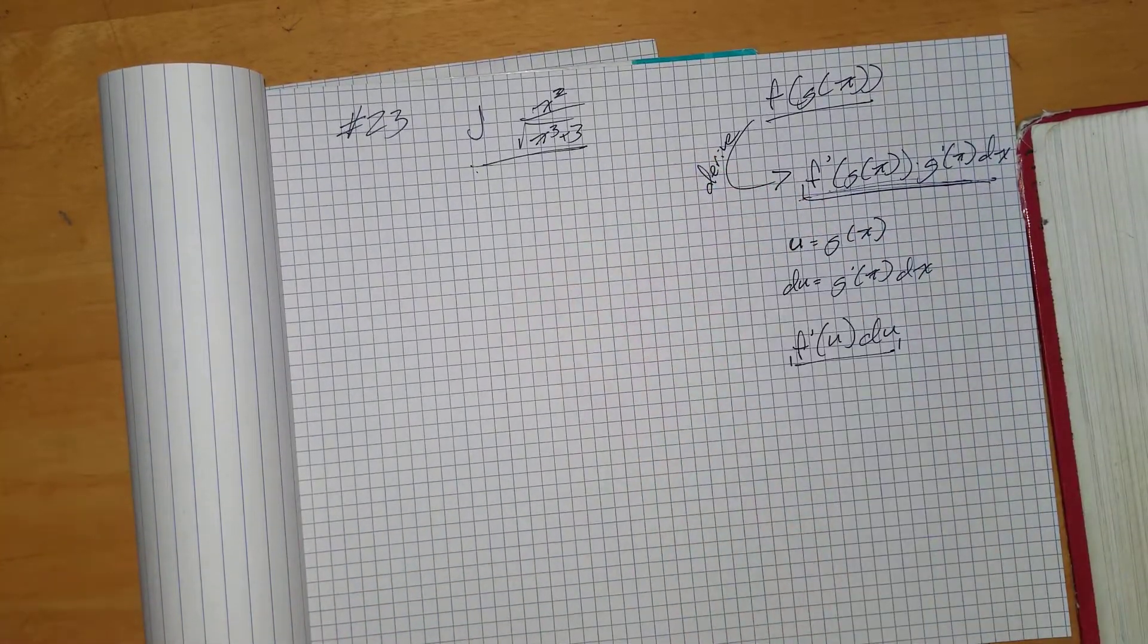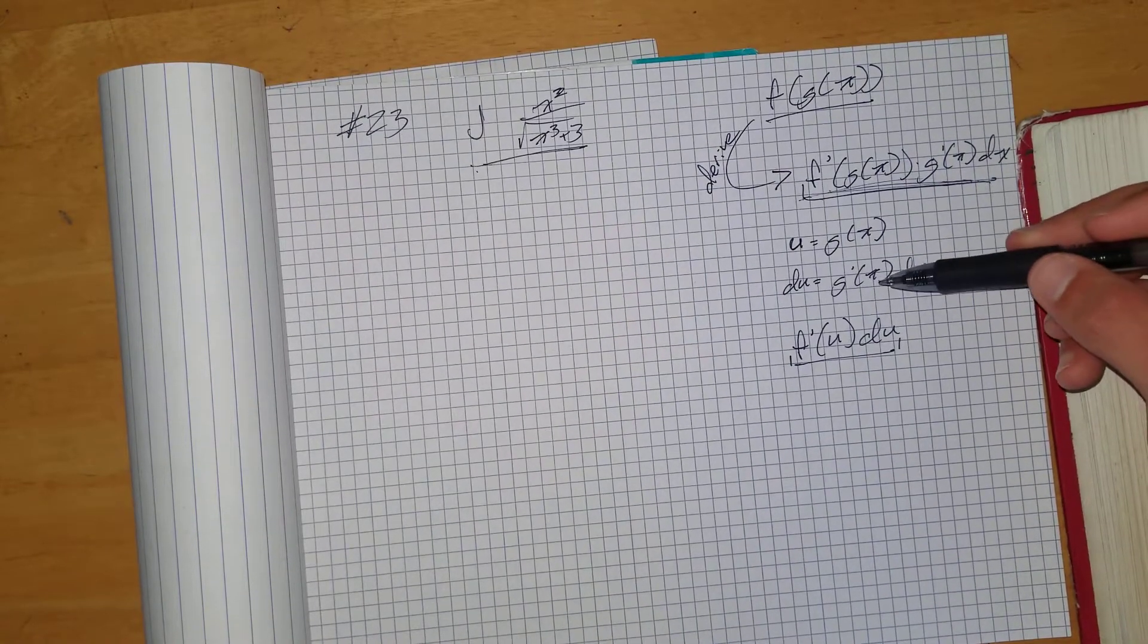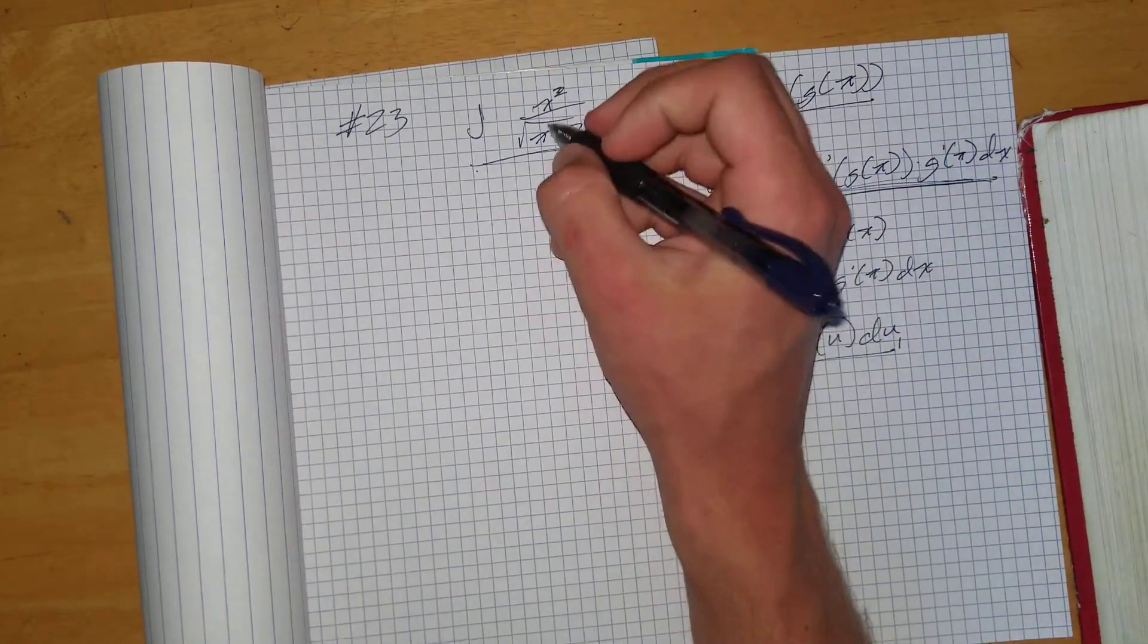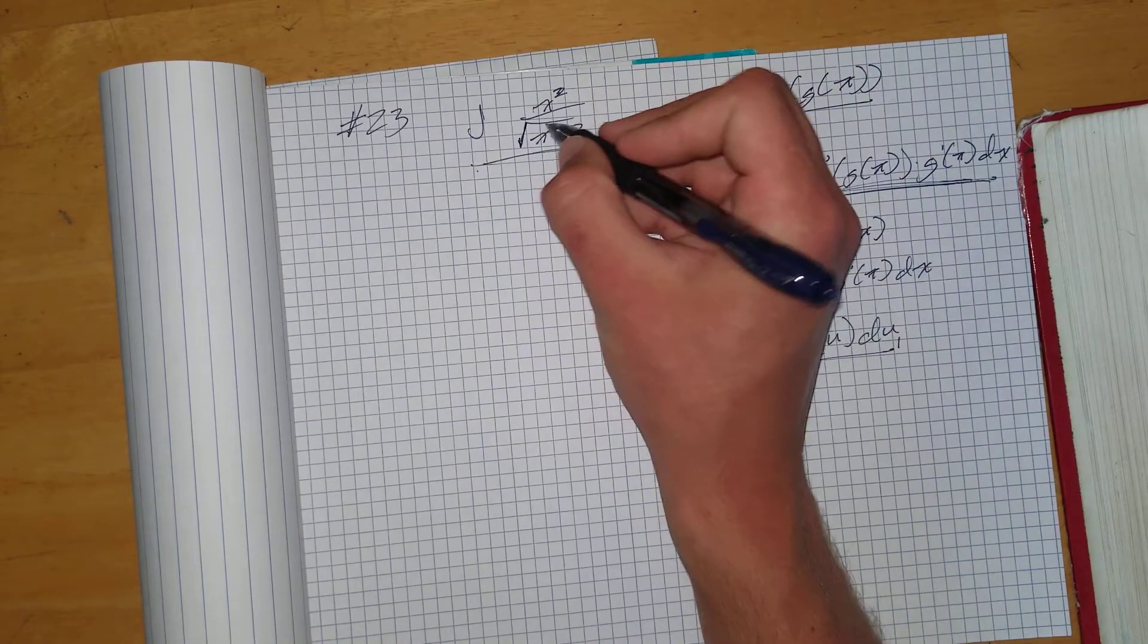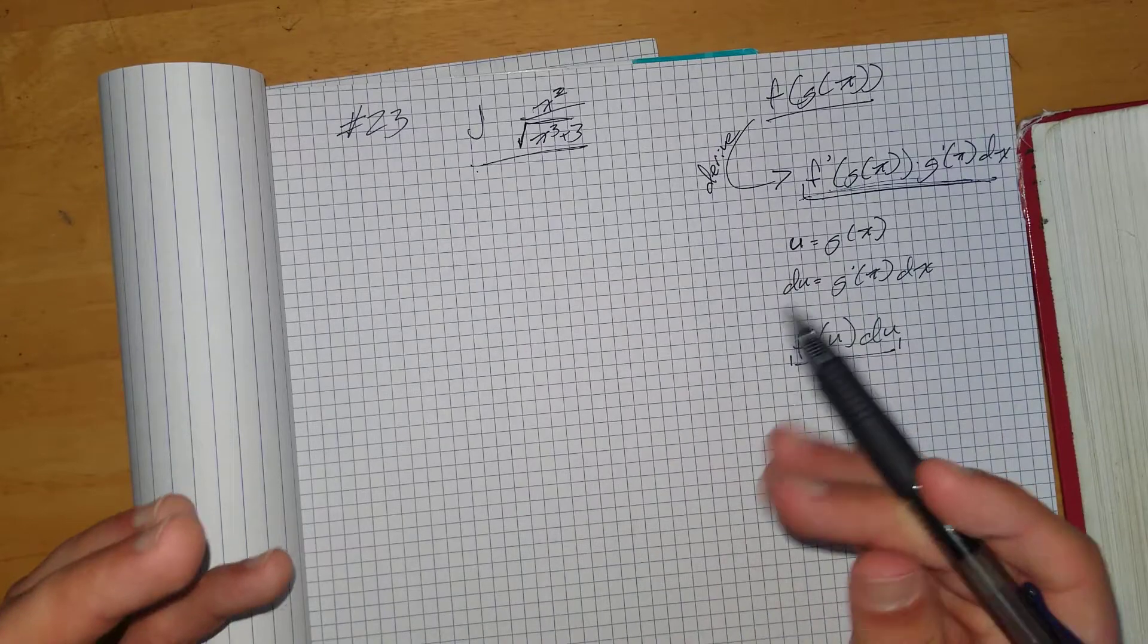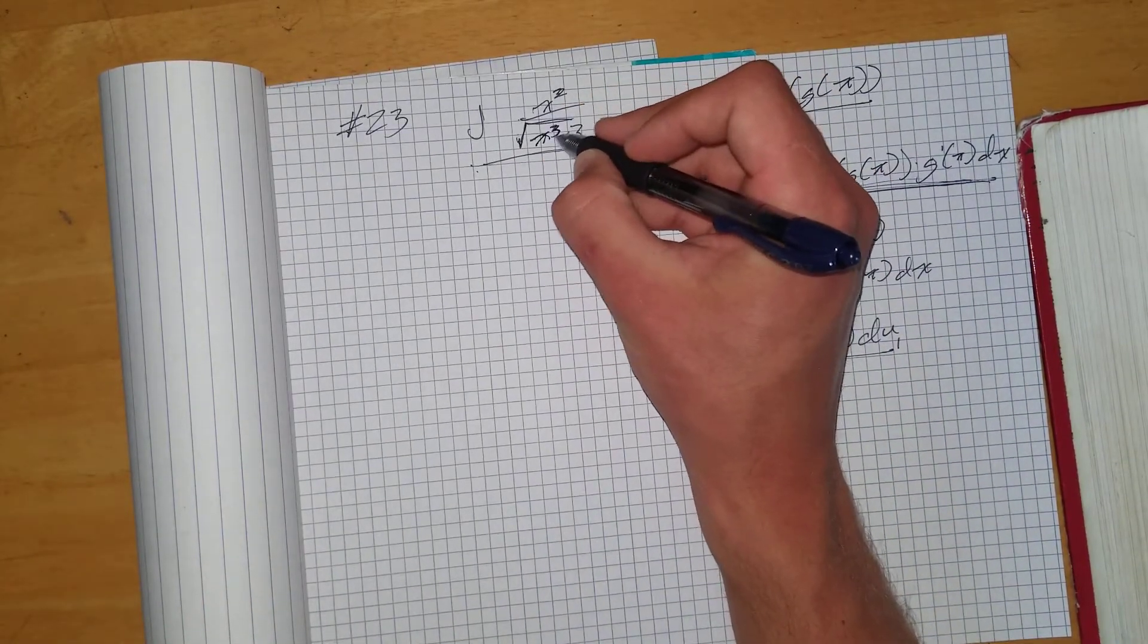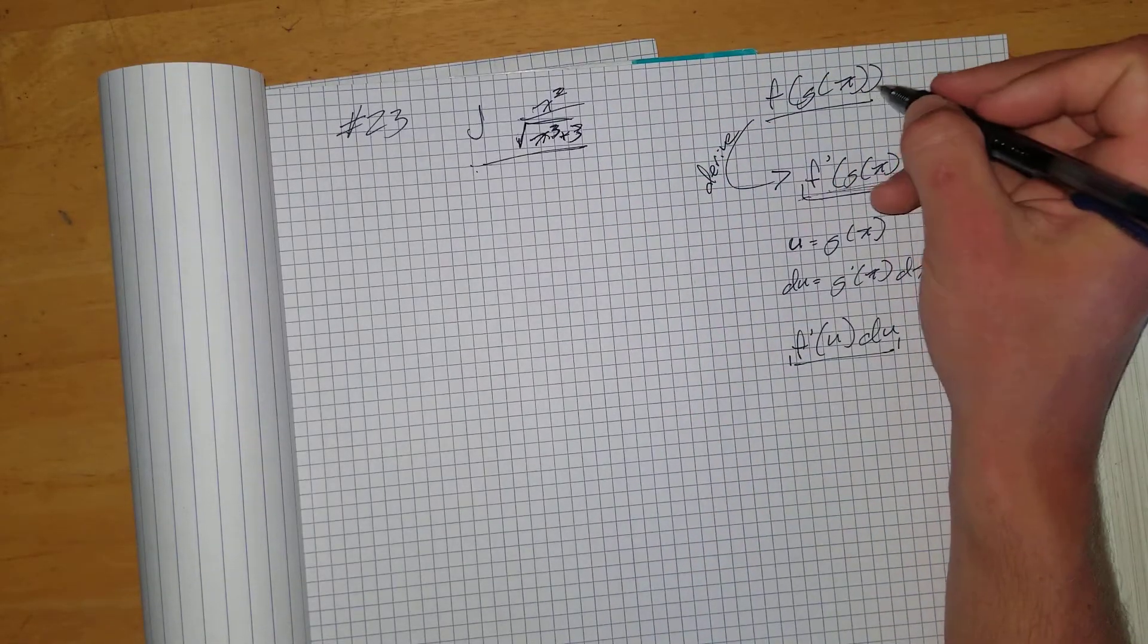So we're going to look over here. We're going to find what our g of x is and what our g prime of x dx is. So the key for looking for this is usually if you see a function around another function. So you see that the square root sign covers this whole function here. So that's kind of the giveaway that that's our g of x.